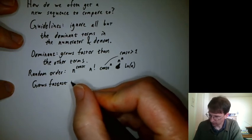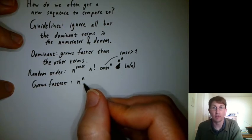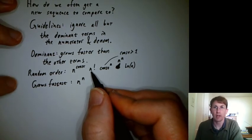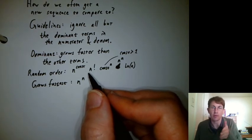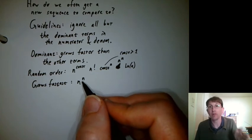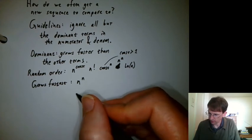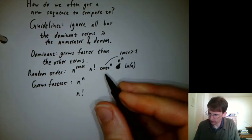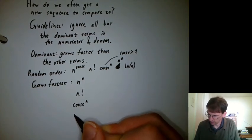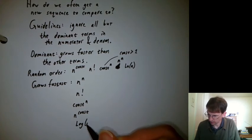So n to the n grows fastest. Like if it's 100, then it's 100 times itself 100 times. Where with n factorial, all the initial values, like the 1 times 2 times 3 times 4, stay the same, and then you just multiply by 100. Here, all the terms go from 100 to 101 and 102. So that's the fastest. And then n factorial, and then constant to the n, and then n to a constant, and then log n.